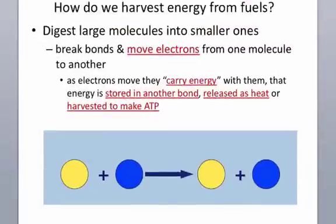How do we harvest energy from the fuel that we eat? Where do we get these fuels from? From the things we eat, right? We do this by moving electrons, and as electrons move, they carry energy. That energy can either be used to make new bonds, it can be released as heat, or it can be harvested as ATP.